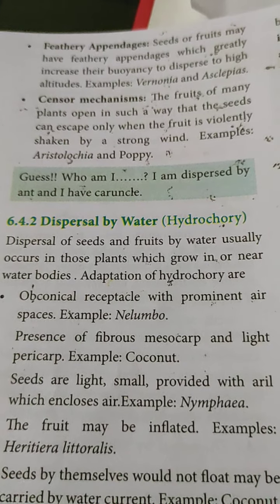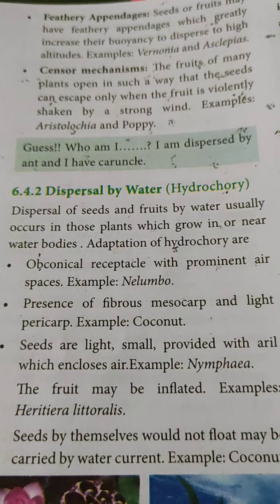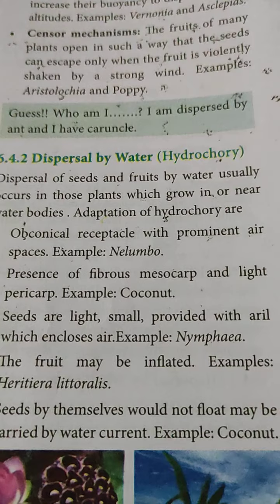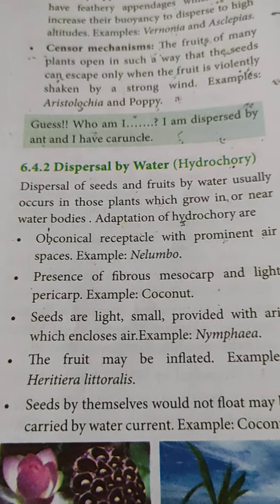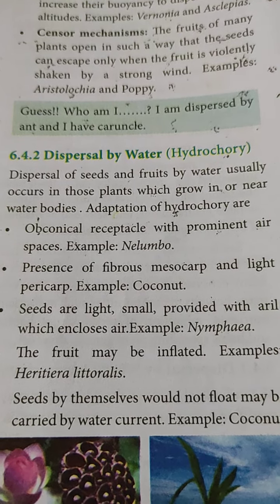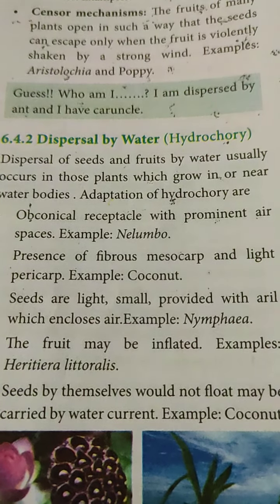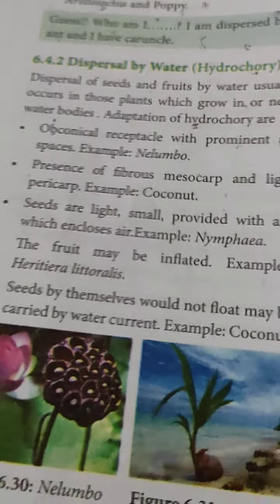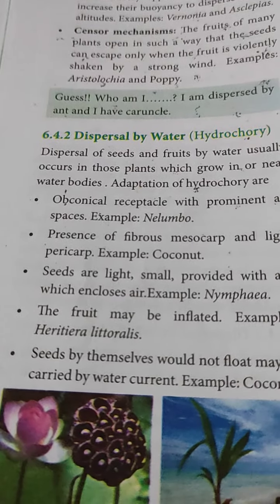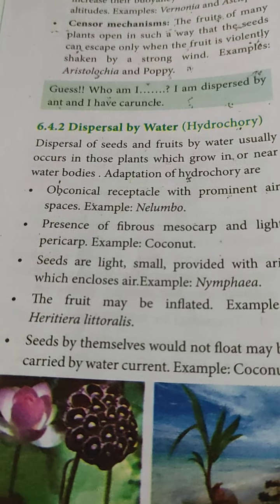Next is dispersal by water, called hydrochory. Dispersal of seeds and fruits by water usually occurs in plants which grow in or near water bodies. One adaptation for hydrochory is the obconical receptacle with prominent air spaces, so the fruit can float in water and reach distant places. Example: Nelumbo (Nilambu).